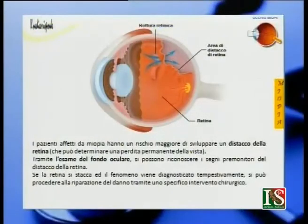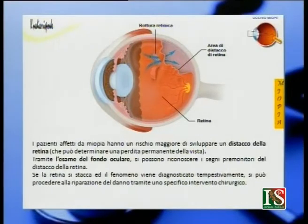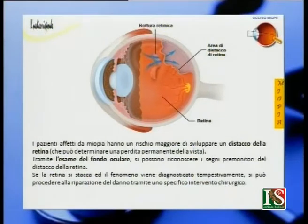Quali sono le cause della miopia? Innanzitutto la rottura retinica. I pazienti affetti da miopia hanno un rischio elevato di sviluppare un distacco di retina che può determinare una perdita permanente della vista. Tramite l'esame del fondo oculare si possono riconoscere i segni premonitori del distacco della retina. Se la retina si stacca e il fenomeno viene diagnosticato tempestivamente, si può procedere alla riparazione del danno tramite uno specifico intervento chirurgico. Anche in questo caso si usa il laser.